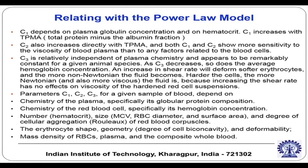It is the hematocrit — the volume fraction of red blood cells — that plays a significant role in altering blood rheology. In describing how the consistency index and behavioral index depend on hematocrit, three important parameters C1, C2, and C3 come into the picture. We will now discuss what factors C1, C2, and C3 depend on.